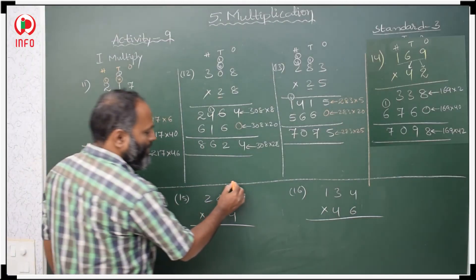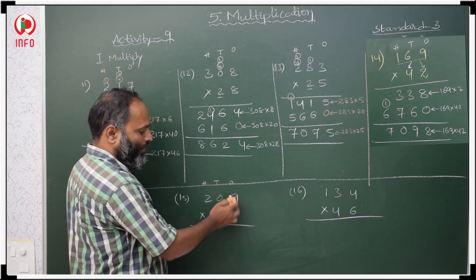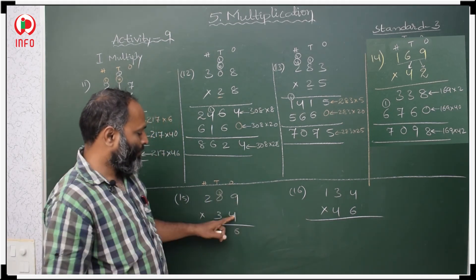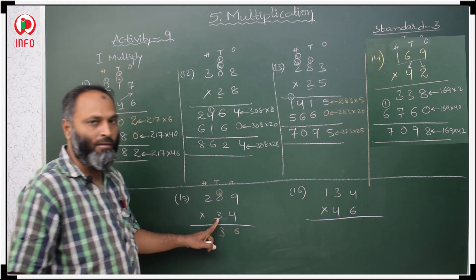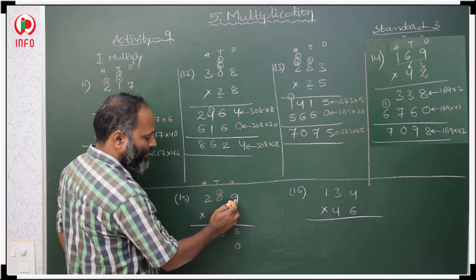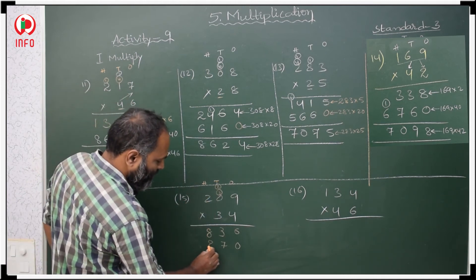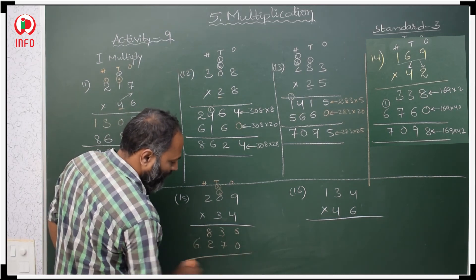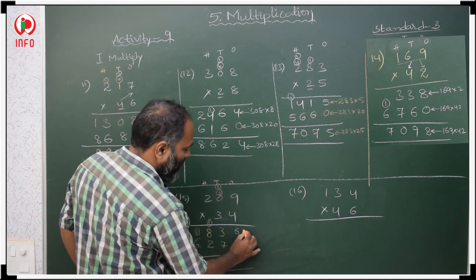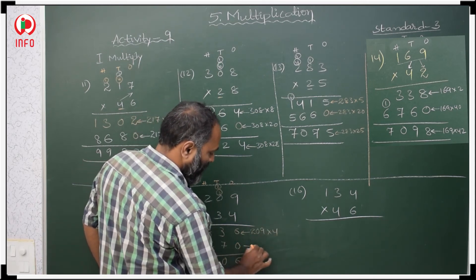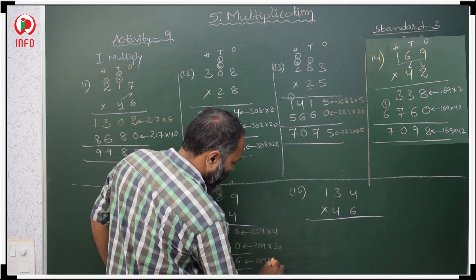This is ones, tens, hundreds place. Start with 4: 4 nines are 36, write 6 ones carry 3 tens; 4 zeros are 0, 0 plus 3 is 3; 4 twos are 8. Now start with 3 in tens place, keep 0 first. 3 nines are 27, write 7 carry 2; 3 zeros are 0, 0 plus 2 is 2; 3 twos are 6. Adding gives the product of 209 with 4, 209 with 30, and 209 with 34.